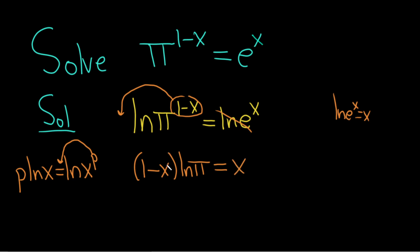Okay, we're looking for x and it's trapped inside these parentheses and there's one over here. So let's start by distributing the natural log of π. 1 times the natural log of π is just the natural log of π, and then negative x times the natural log of π is just -x ln(π). And over here we have x.